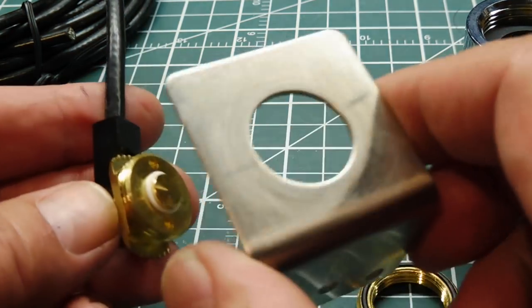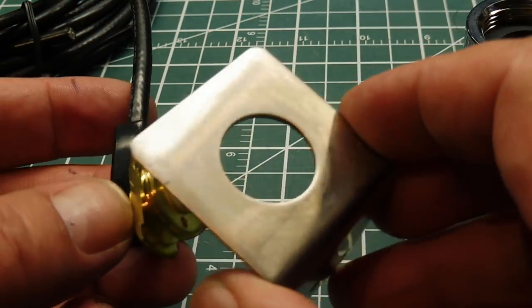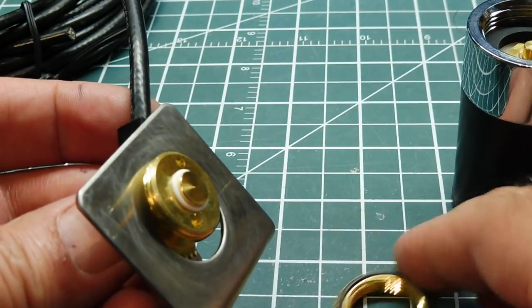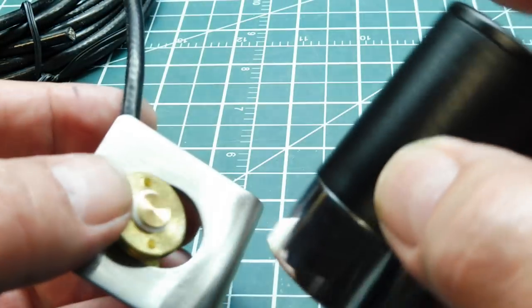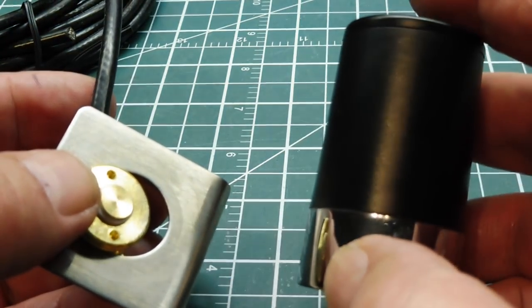And that will seal out any water getting into your project enclosure. So all you need is a three-quarter inch hole, like that, into your enclosure. And then feed the connector through, put the collar on, and then apply your antenna. So that's another antenna that you could use for your LoRa radio.